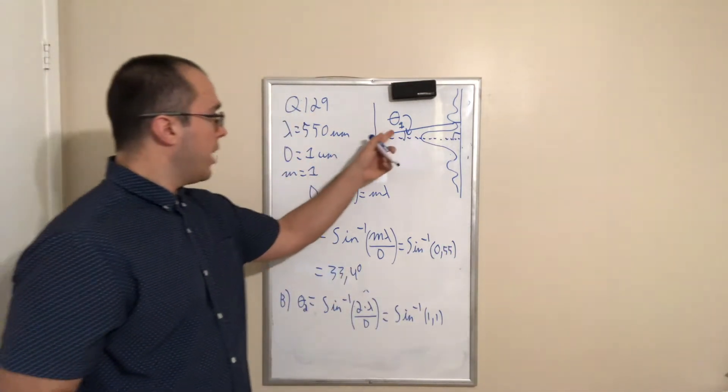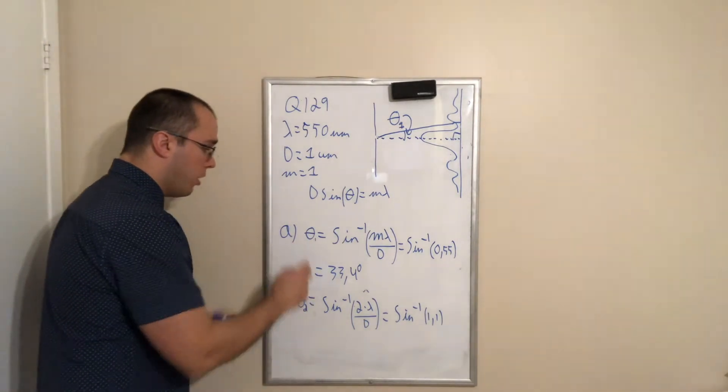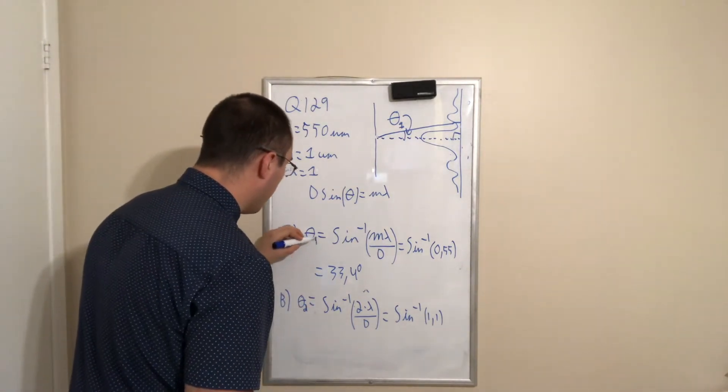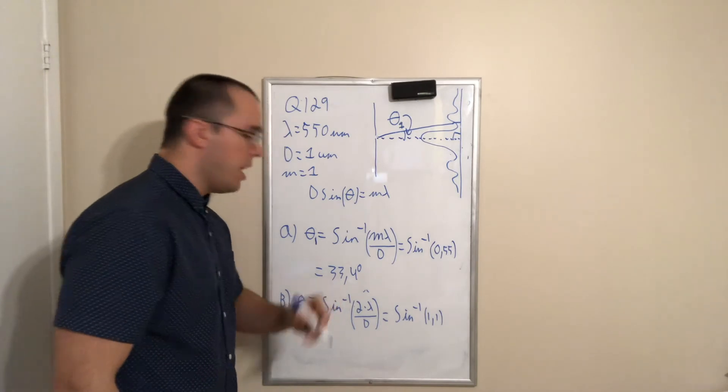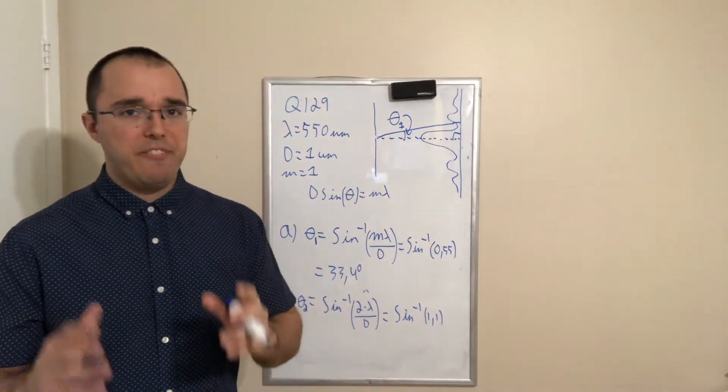So the first angle, and I wrote theta 1 over here, the angle of the first minimum, is 33.4 degrees.